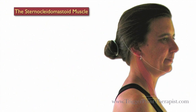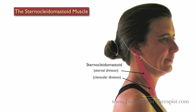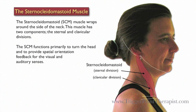The Sternocleidomastoid Muscle, or SCM, wraps around the side of the neck. This muscle has two components: the sternal and clavicular divisions. The SCM functions primarily to turn the head and to provide spatial orientation feedback for the visual and auditory senses.